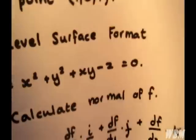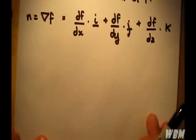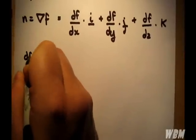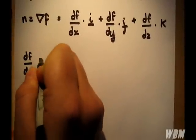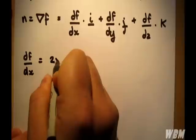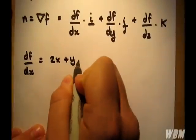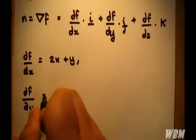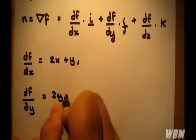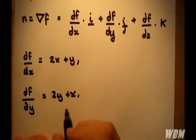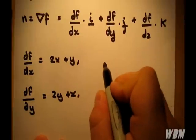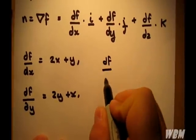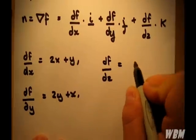So we'll write these three down before substituting them into the equation. Partial f partial z is minus 1.